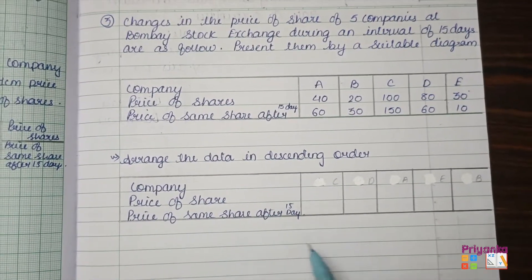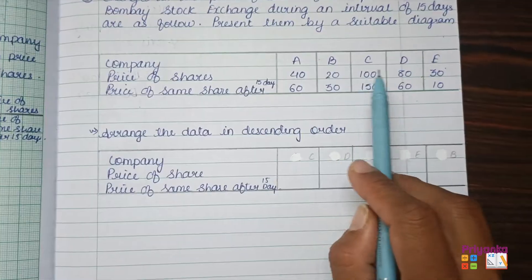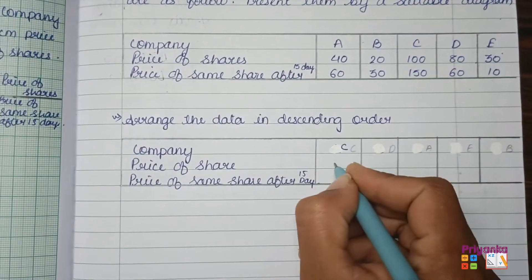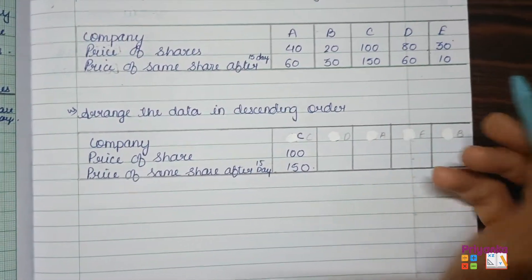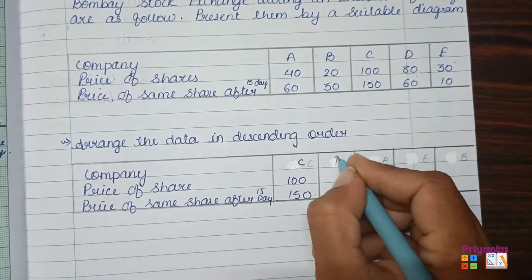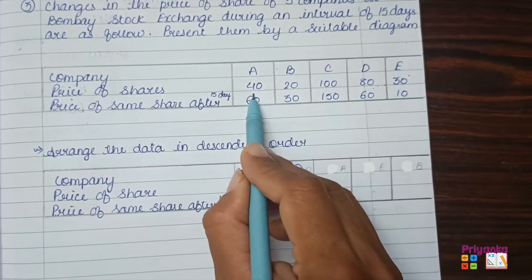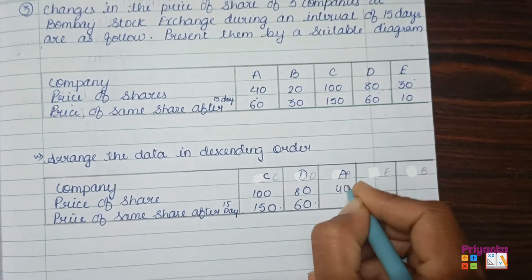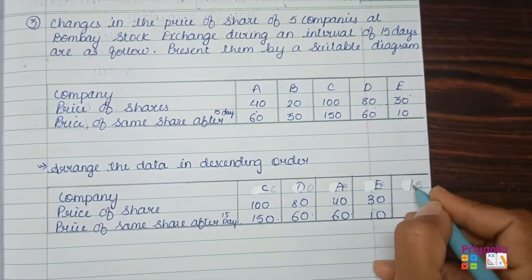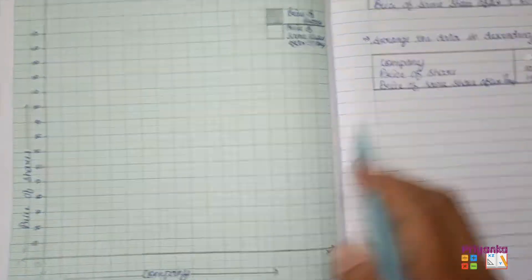For a multiple bar diagram, remember to arrange the data in descending order. Check which company has the highest price: Company C with 100 and 150. Next in descending order is Company D with 80 and 60, then Company A with 40 and 60, then Company E with 30 and 10, and finally Company B with 20 and 30.